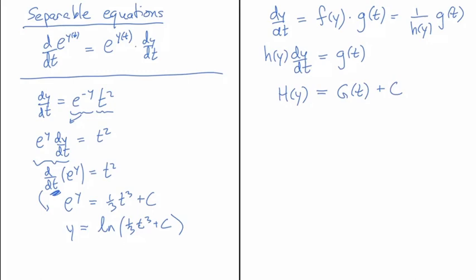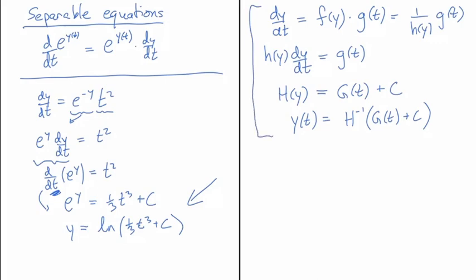If we're lucky, we can solve for y explicitly by inverting the function H. In the previous example, we inverted the exponential to get the log. In general, y of t equals H inverse of G of t plus c — if that inversion is possible. If not, we at least have an implicit expression for the solution. That's the formal, general way of writing what we just did.